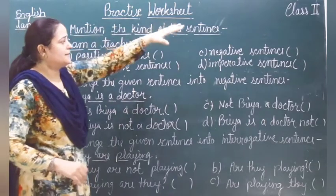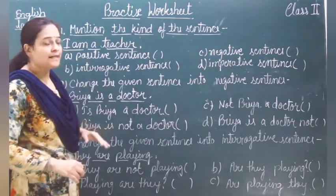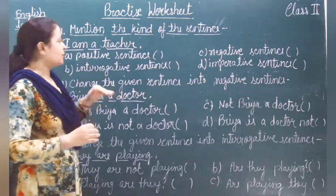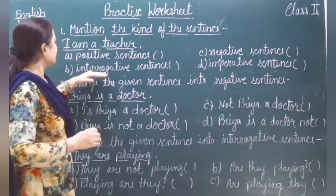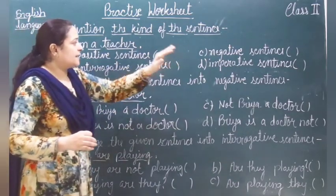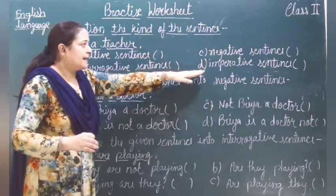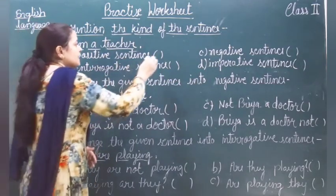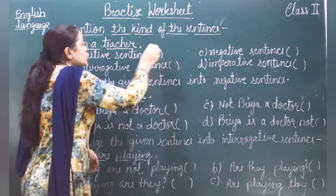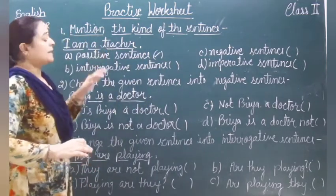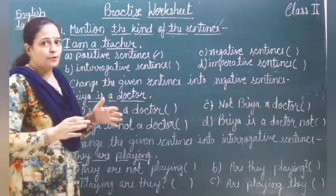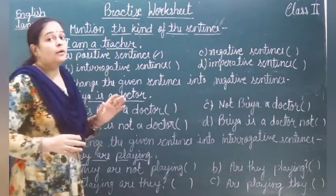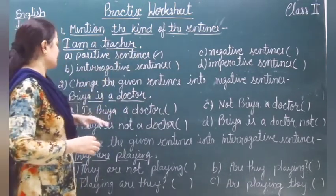Mention the kind of the sentence. The sentence is: I am a teacher. The options are: positive sentence, interrogative sentence, negative sentence, and imperative sentence. I am a teacher is a positive sentence because there is no negative word like 'not' or 'no' in the sentence, and this is not even a question. So this is a positive sentence.